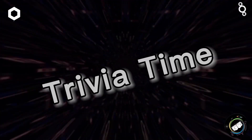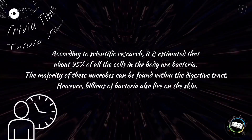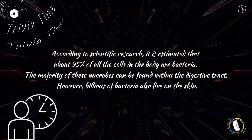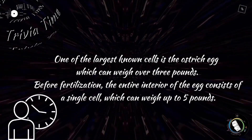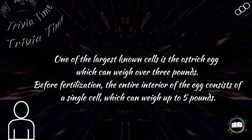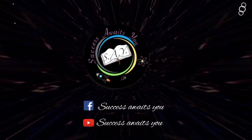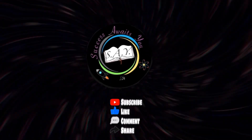Trivia time — do you know? There are more bacterial cells in the body of humans than human cells. The largest living cell in nature is the ostrich egg. This is very much a revision or recapitulation video. Take care and thank you for watching.